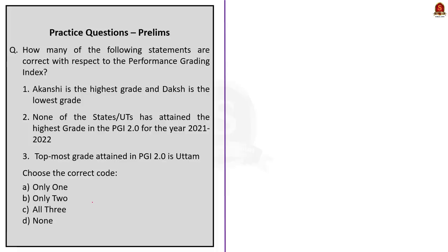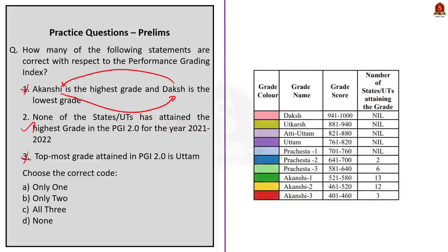The second question is based on the Performance Grading Index discussion, with three statements to evaluate. Statement 1 says Akanshi is the highest grade and Daksh is the lowest — this is incorrect, as Daksh is the highest and Akanshi 3 is the lowest. Statement 2 says none of the states or union territories have attained the highest grade in PGI 2.0 for 2021-22 — this is sadly correct. Statement 3 says the topmost grade attained in PGI 2.0 is Uttam — this is incorrect, as the highest grade actually attained by states is Prachastha. Since only statement 2 is correct, the answer is option A: only one.